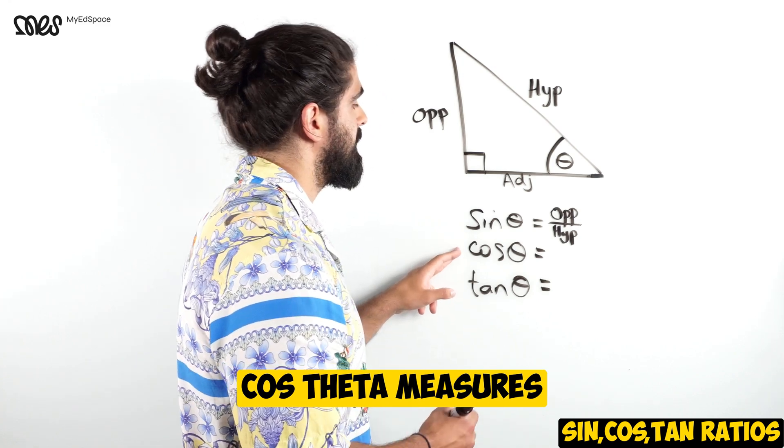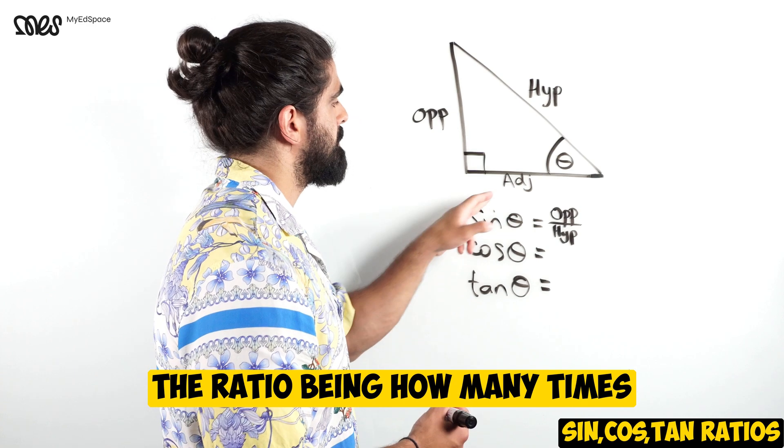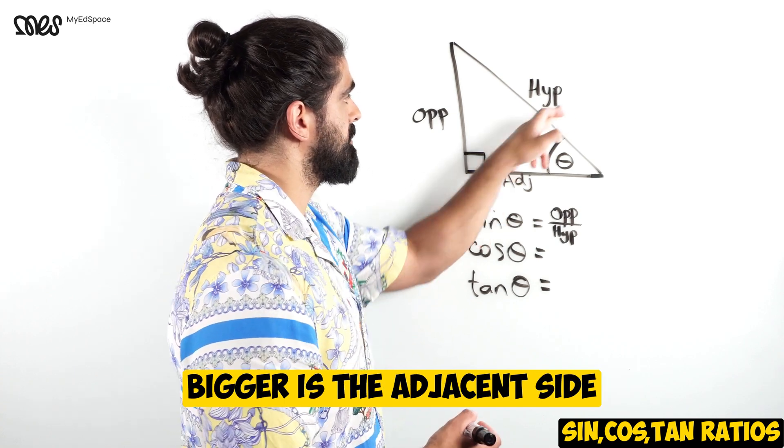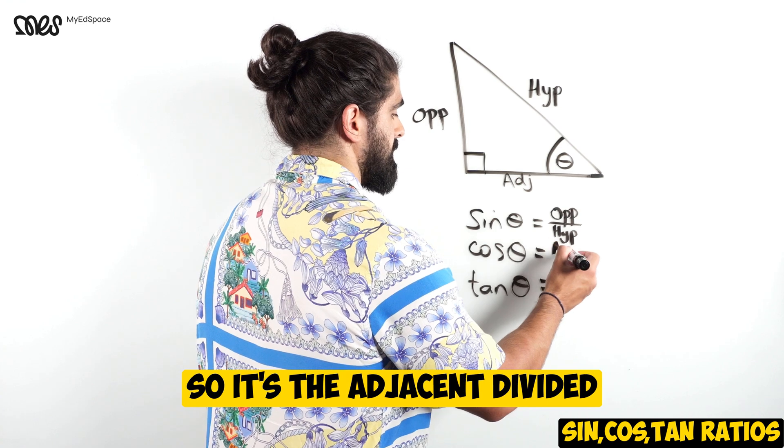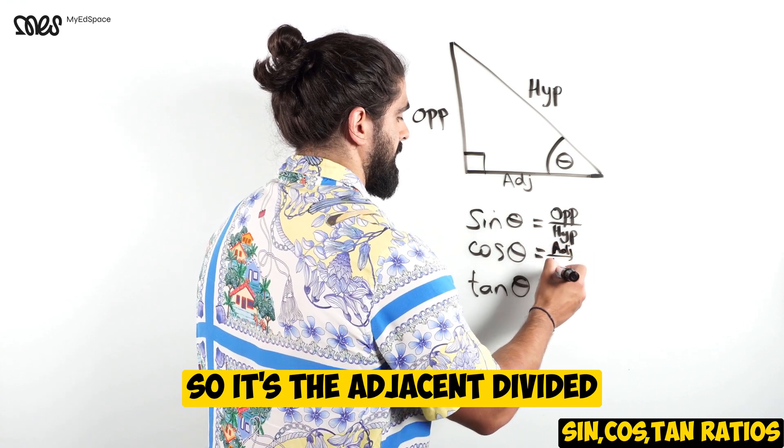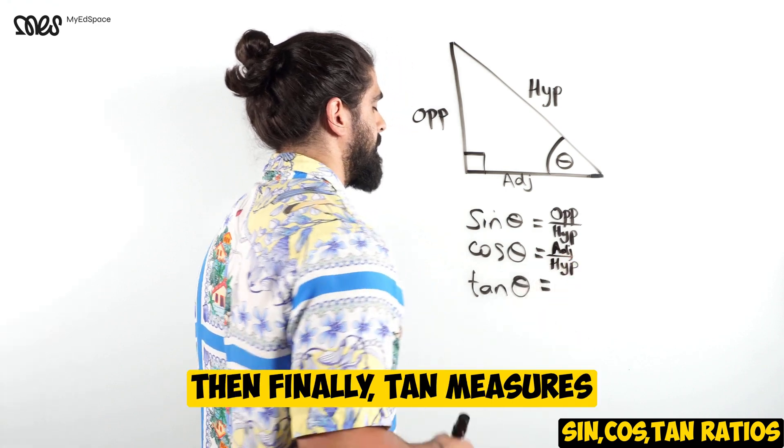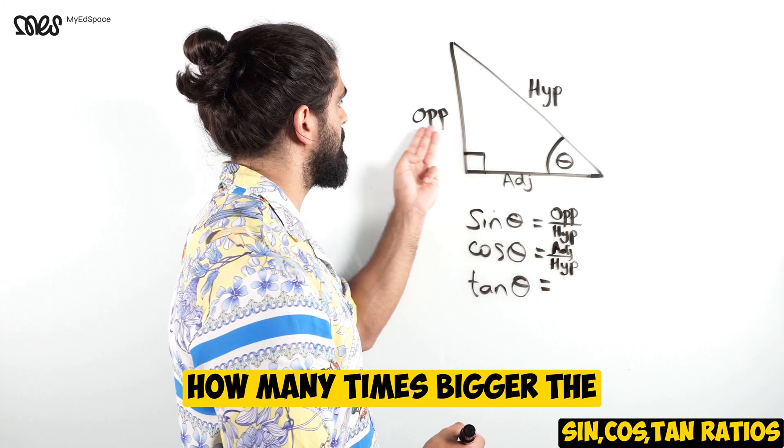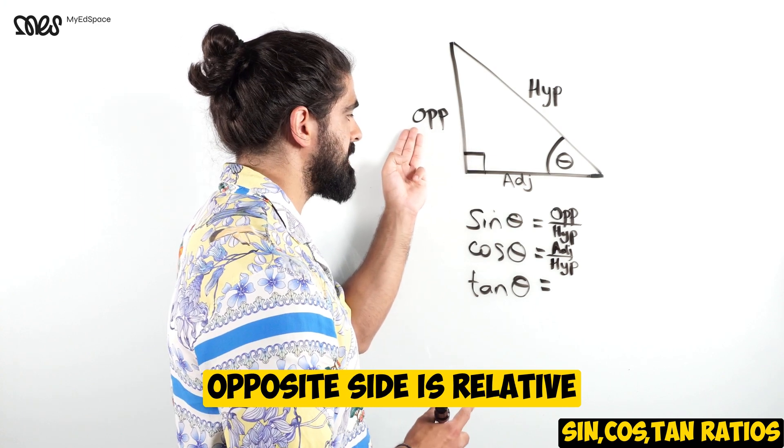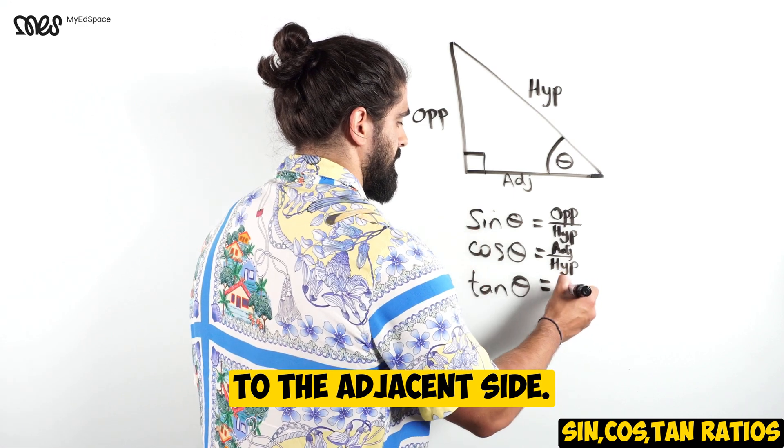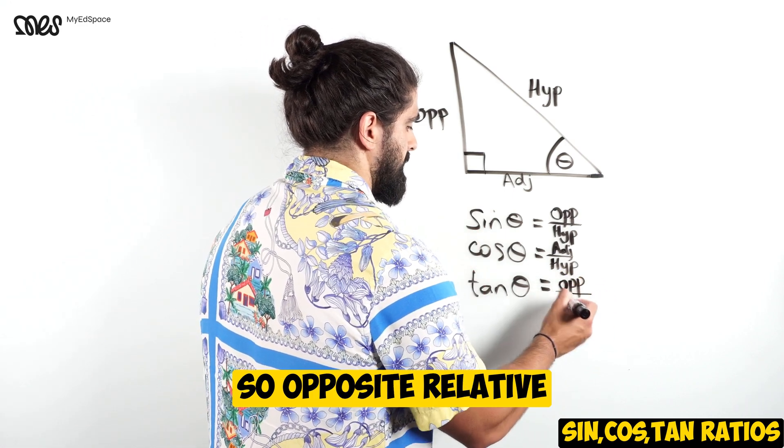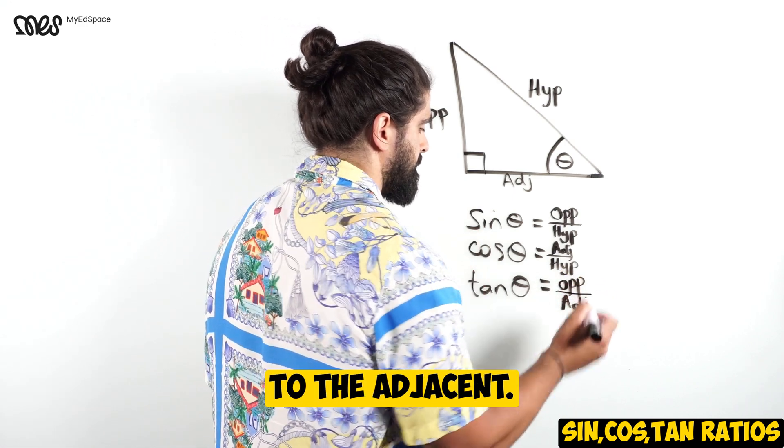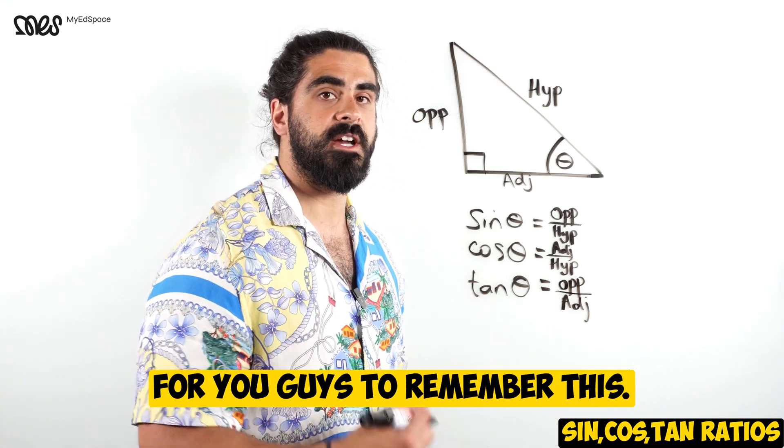Cos theta measures the ratio of how many times bigger is the adjacent side relative to the hypotenuse - adjacent divided by the hypotenuse. Tan measures how many times bigger the opposite side is relative to the adjacent side.